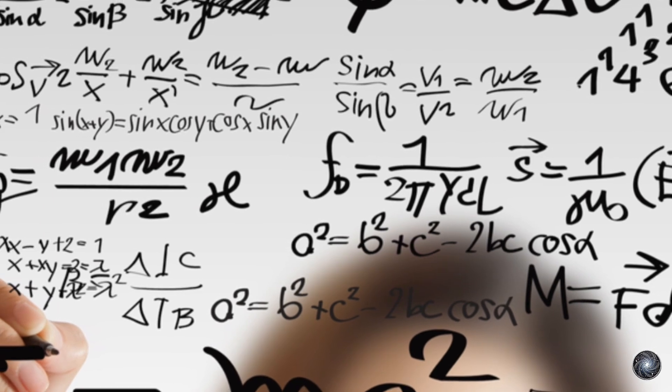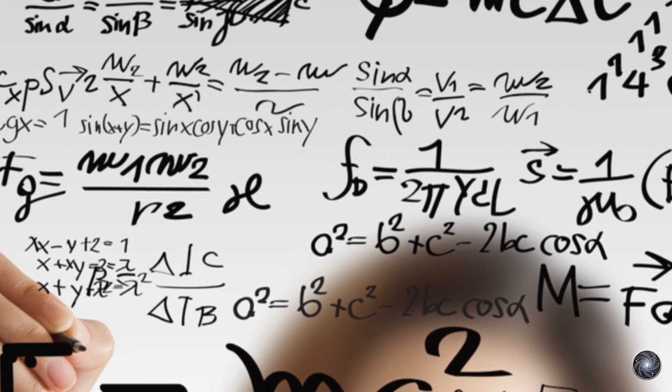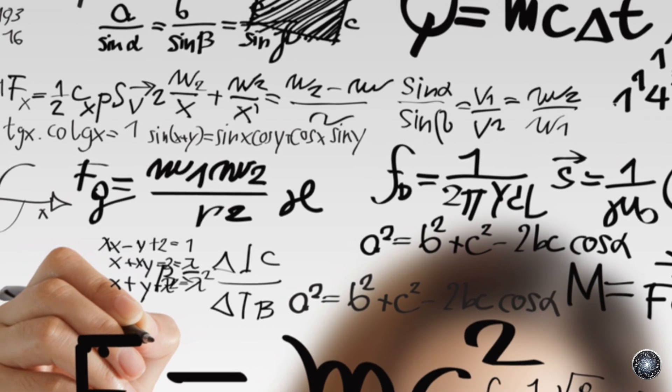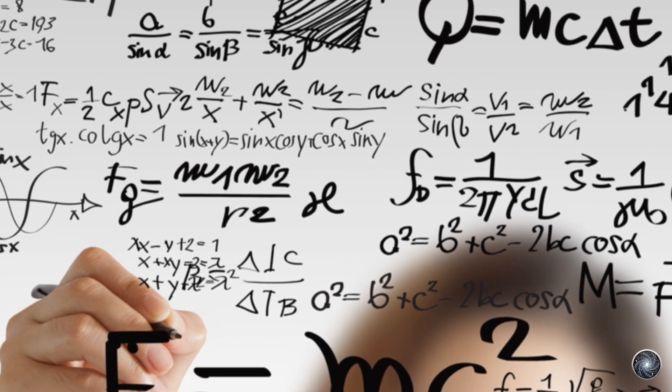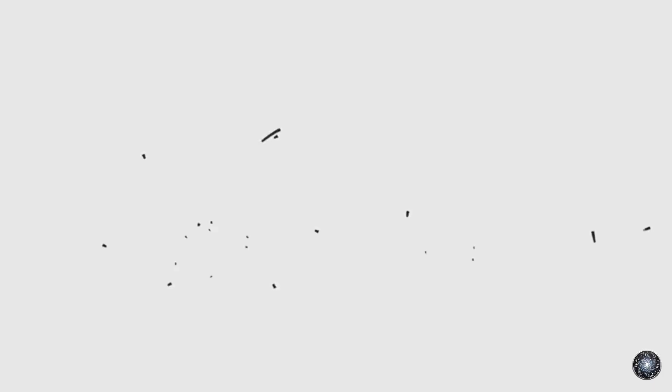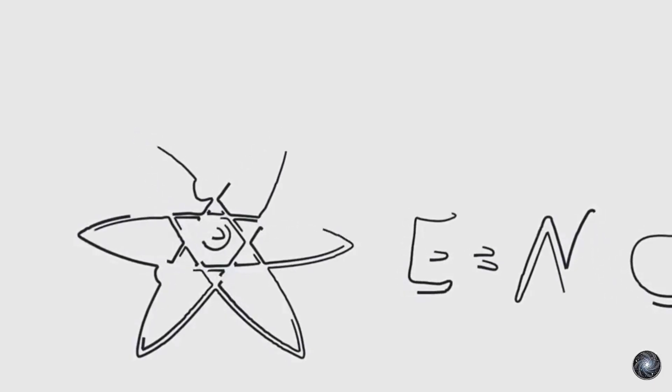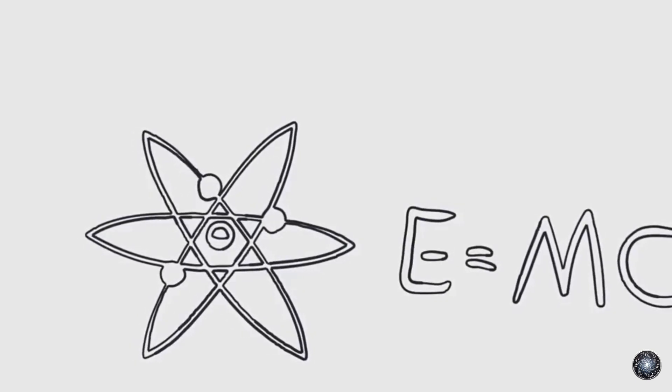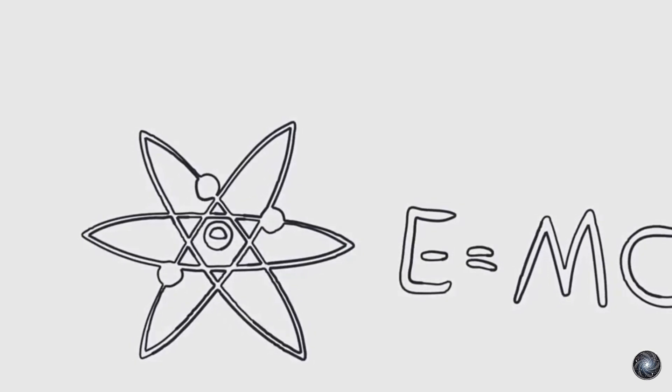Einstein's insight led him to propose the theory of special relativity in 1905. This theory fundamentally changed our understanding of space and time, showing that they are interconnected and relative to the observer. Special relativity introduced the concept that time could slow down or speed up depending on how fast you are moving relative to something else. This was a mind bending idea that challenged our everyday experiences.